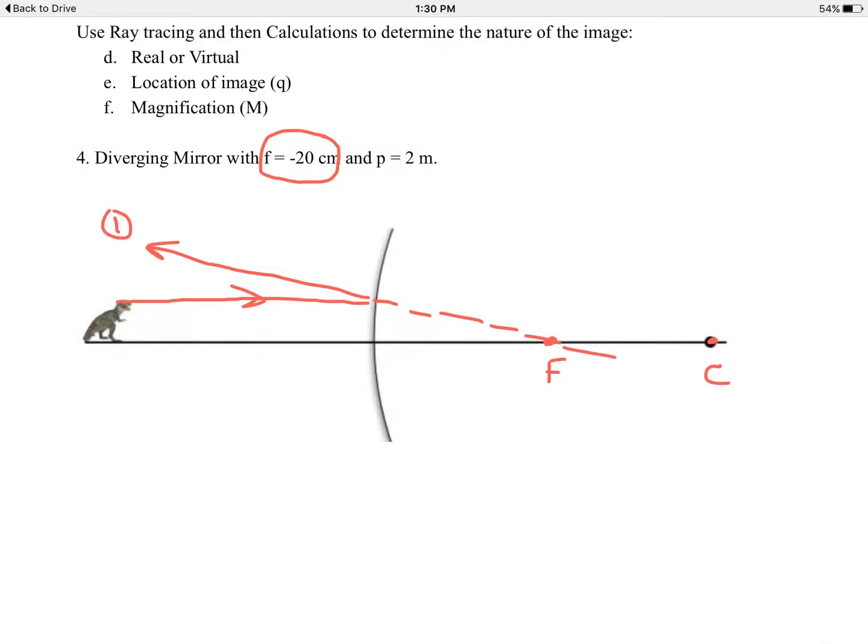That's ray number one—the one that comes in parallel and reflects out through the focal point. The second option we have is when it's the opposite of that. It's a ray of light starting from the T-Rex's head going towards F. So that one's going towards F. It cannot go through the mirror, but if it did, it would hit F. But it doesn't go through the mirror—it reflects backwards, parallel to the principal axis.